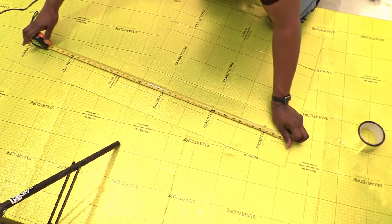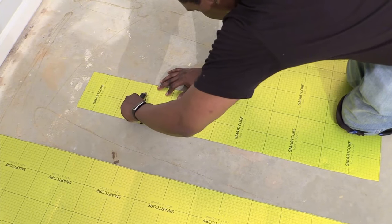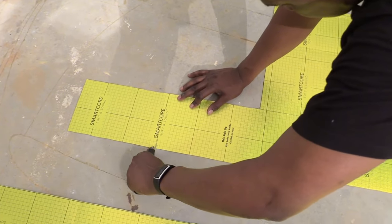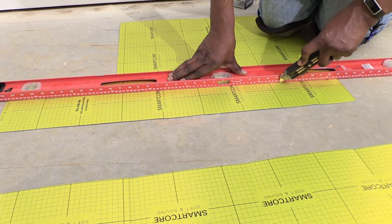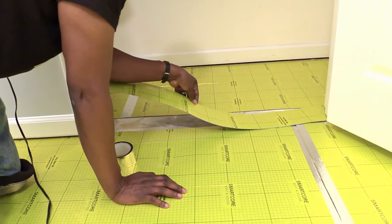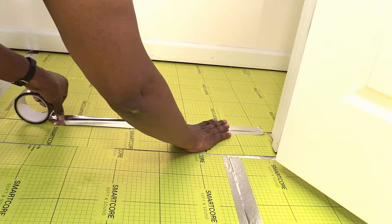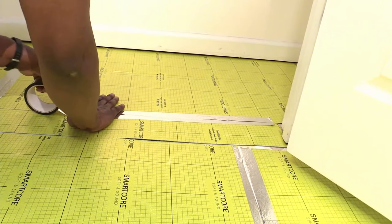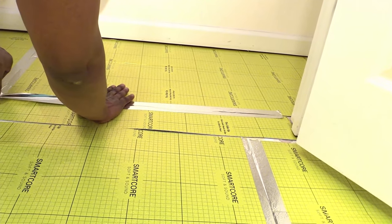This underlayment is 1.5 millimeters thick and provides sound suppression by lowering the echoes in the room even while you're laying it down. It also has thermal properties that will help keep the flooring warm during colder months.